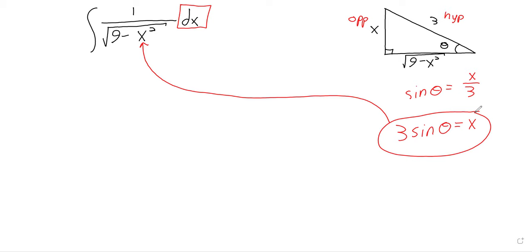Good news — this is going to work exactly how it worked in u-substitution, which is also how it works in integration by parts: if we wanted du, we just took a derivative and then put a dx on the end. The derivative of 3 sine of theta is 3 times the cosine of theta, so 3 cosine theta dθ equals dx.